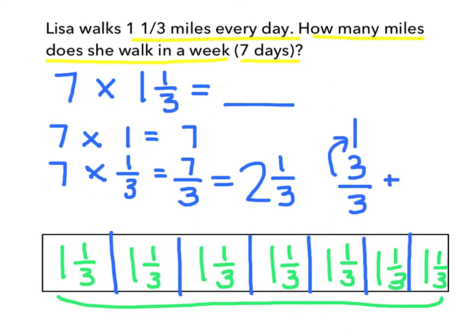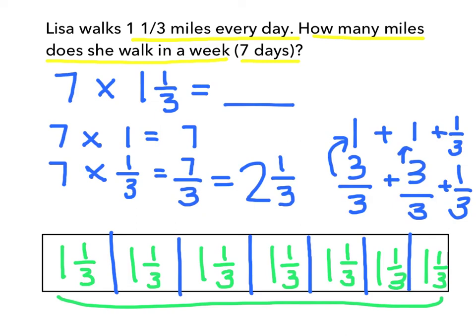Now I'm going to add another group of three thirds, and that is also equal to one, so I'm going to write another plus one. And then lastly, I have one third left over, so I'm going to add another one third. When I add up one plus one plus one third, that gives me two and one third. So three thirds is one, plus another three thirds is another one, plus one third is two and one third.